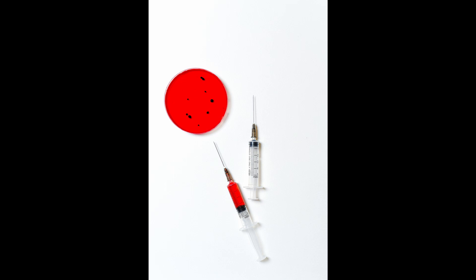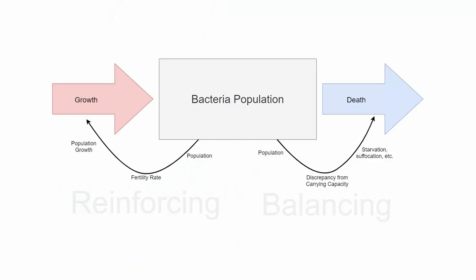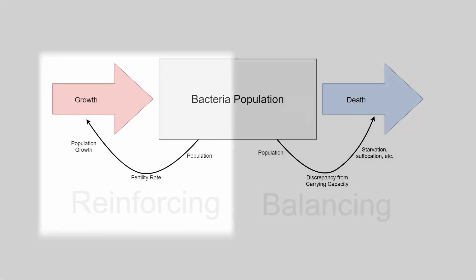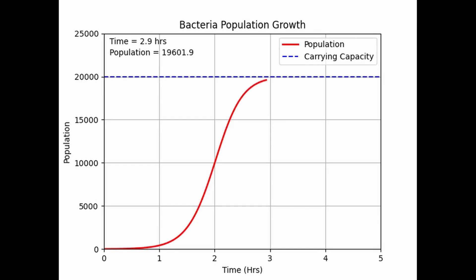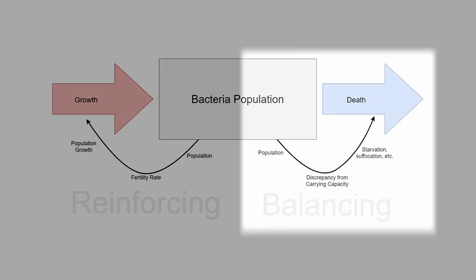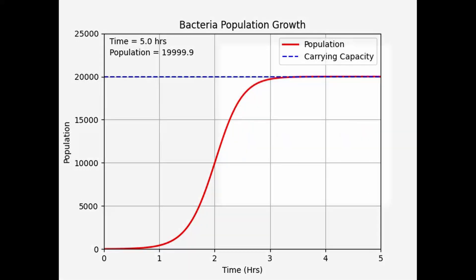The next example is a system with one stock, one reinforcing loop, and one balancing loop. A culture of bacteria in a petri dish would be a good model. At the beginning, we have a certain growth rate for the bacteria, and the more bacteria we have, the more it can grow — that's when the reinforcing loop is dominant. Once the population crosses a certain threshold, however, resources become scarce and the bacteria start starving and suffocating each other. This is when the balancing loop begins to dominate. These systems will typically have both exponential growth and decay, otherwise known as S-curves, depending on which loops are dominant.